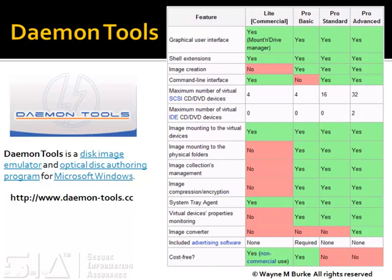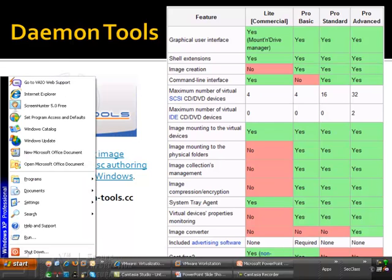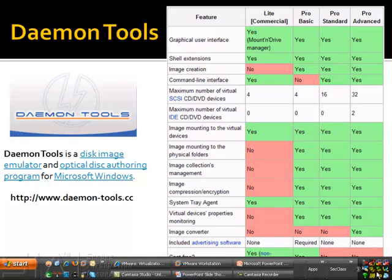The first software package we're going to start with is Daemon Tools. You can download it from the link on screen. There are different versions with different features: you've got the Light, Pro Standard, and Pro Advanced versions. For our purposes, the Light version will be more than sufficient — we could also use CD or DVD imaging software such as Nero. I've actually got a slightly older version installed, and I'm going to take you through actually installing the package itself so you can see it doesn't require any rocket science.